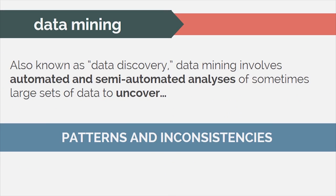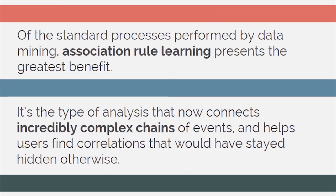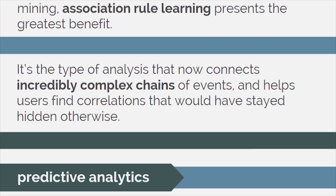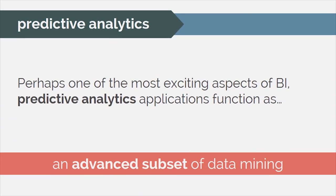Also known as data discovery, data mining involves automated and semi-automated analyses of sometimes large sets of data to uncover patterns and inconsistencies. Of the standard processes performed by data mining, association rule learning presents the greatest benefit. It's the type of analysis that now connects incredibly complex chains of events and helps users find correlations that would have stayed hidden otherwise.